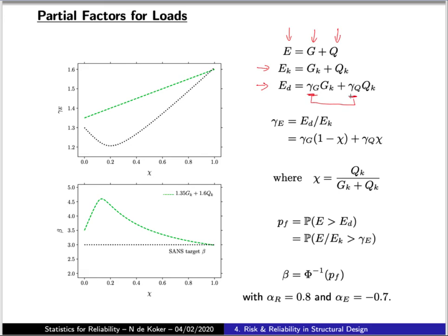We can define an effective partial factor for our total load effect as the ratio between the design value and the characteristic value, and express that partial factor in terms of the partial factors for the self-weight and imposed load by taking into account this parameter chi, which gives you a relative measure of the contribution of the imposed load to the total load effect.